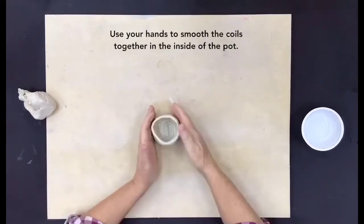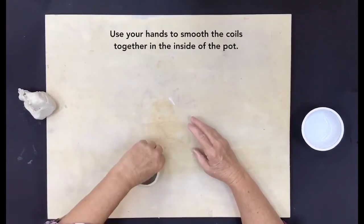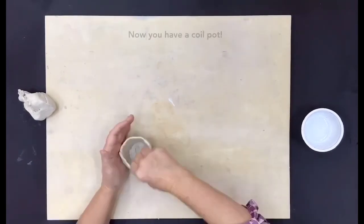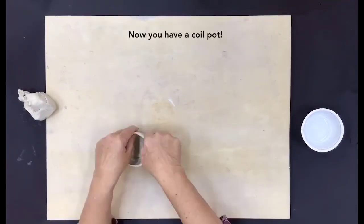Use your hands to smooth the coils together in the inside of the pot. Now you have a coil pot.